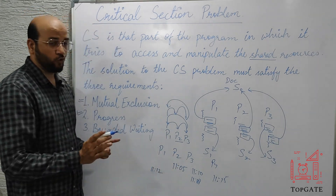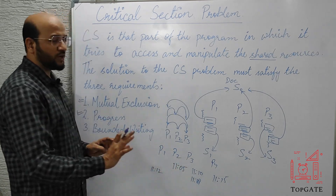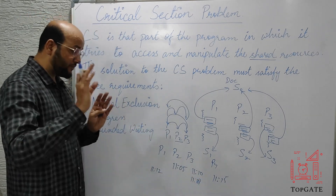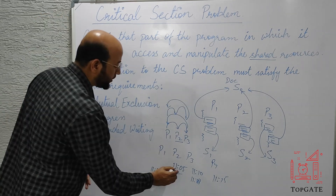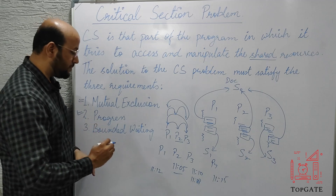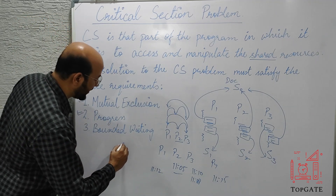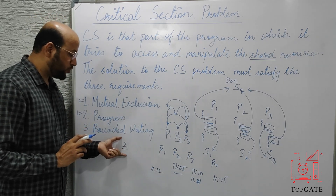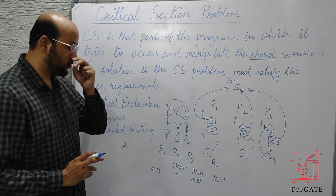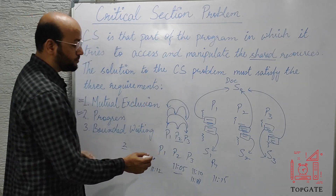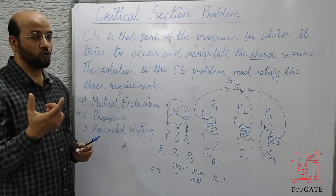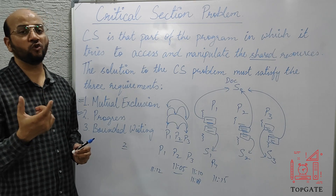This should not be done. On every wait time, we should add some bound value — suppose the bound value is 2. That means P2 should not wait for more than 2 rounds. One bound is P3, one bound is P4. So after P4, it is mandatory for the system to give chance to P2 to go to the critical section next. On every wait time, there should be some bound value more than which a process cannot wait to enter the critical section.